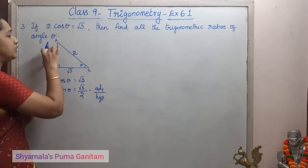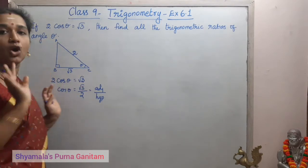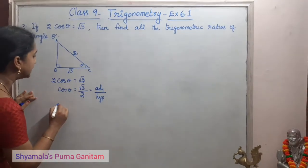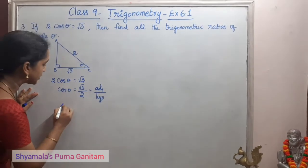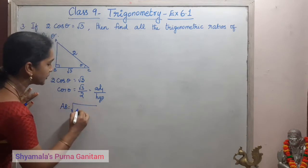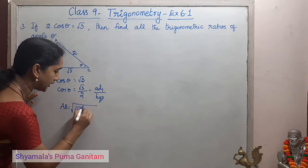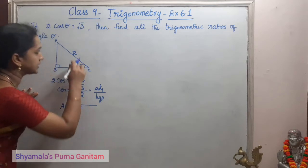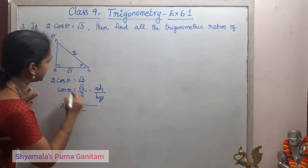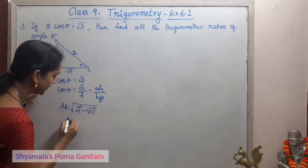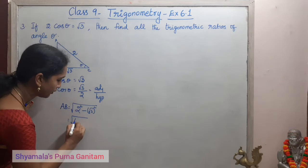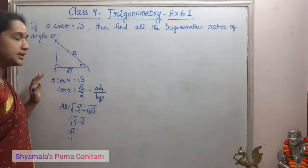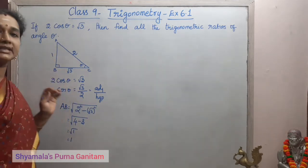First, we need the opposite side of θ. For finding that, we use the Pythagorean theorem. We need the length of AB. AB = √(2² − (√3)²) = √(4 − 3) = √1 = 1. So we got the length of AB as 1.